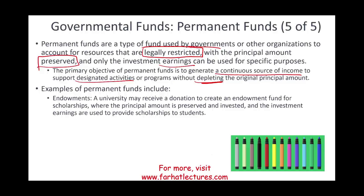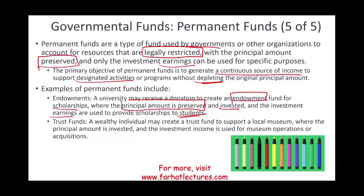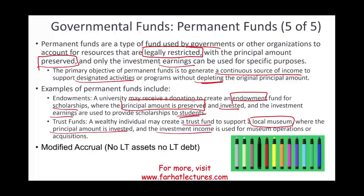Examples of permanent funds include endowments, where a university receives a donation to provide scholarships — the principal is invested and only earnings fund the scholarships — and trust funds where a wealthy individual contributes to support a local museum or park maintenance. You can only spend the interest or revenue from the fund, never the original principal. Permanent funds use modified accrual: no long-term assets, no long-term debt.